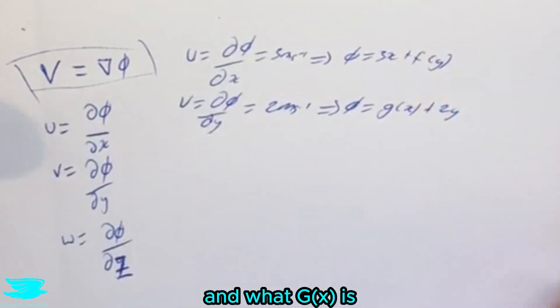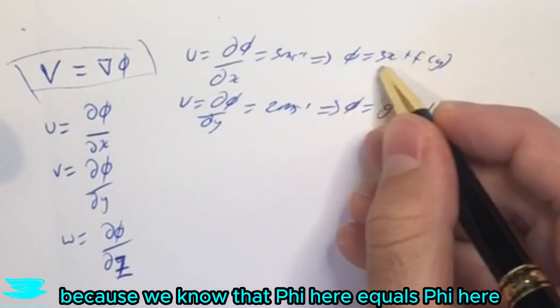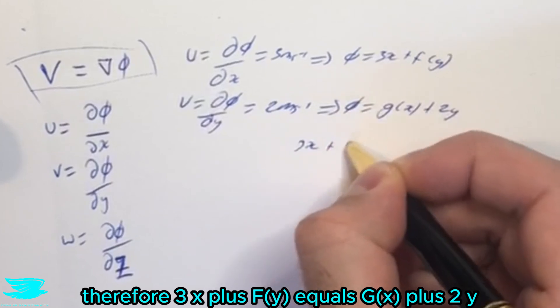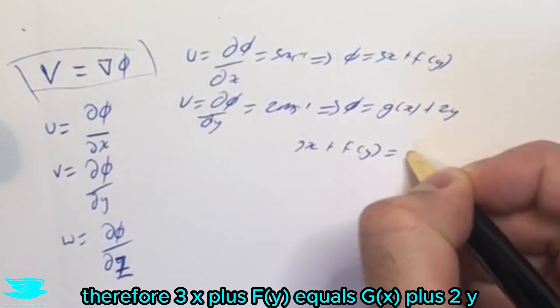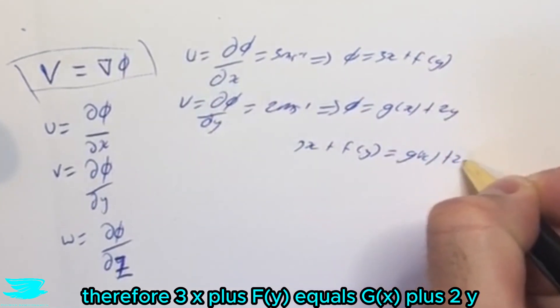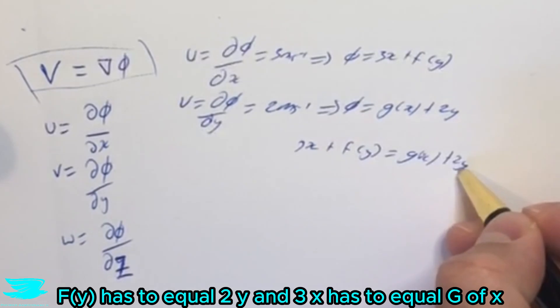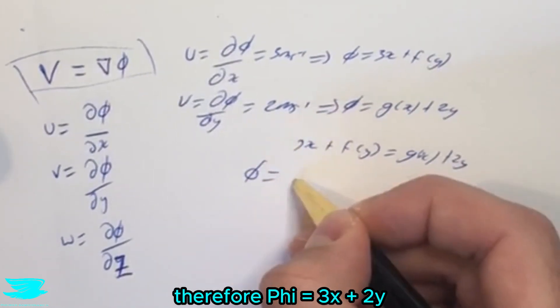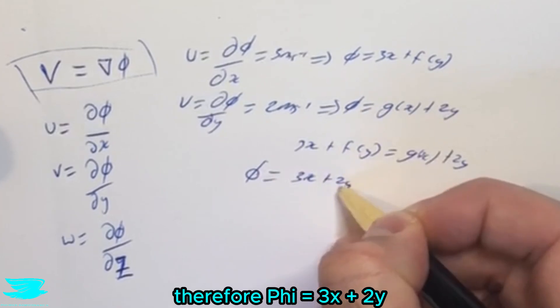Therefore 3x plus f(y) equals g(x) plus 2y, therefore f(y) has to equal 2y and g(x) has to equal 3x, therefore phi equals 3x plus 2y.